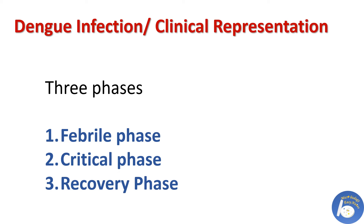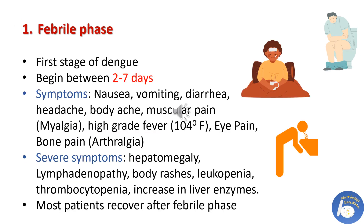Dengue infection presents in three phases: the febrile phase, the critical phase, and the recovery phase. The febrile phase is the first stage, beginning two to seven days after the mosquito bite. Symptoms include nausea, vomiting, diarrhea, headache, body and muscular pain (myalgia), high-grade fever, eye pain, and bone pain also known as arthralgia.